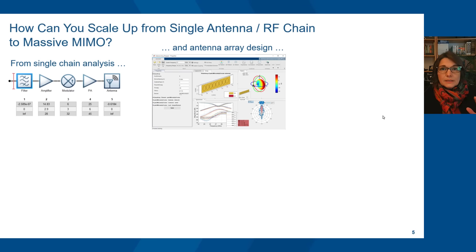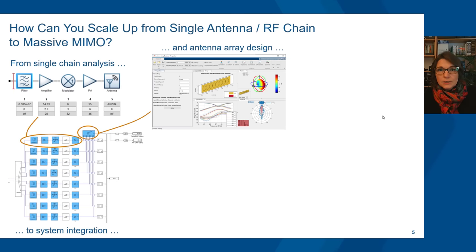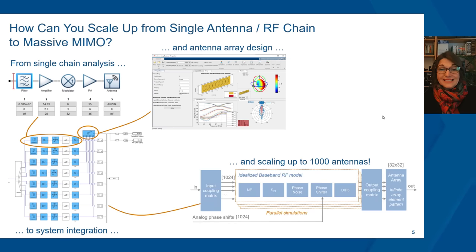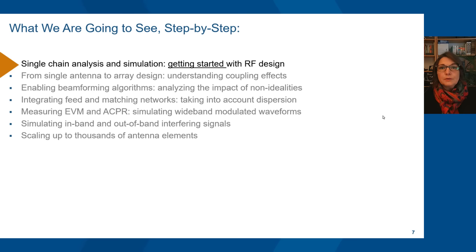We will start with the design of a single chain as our baseline, then design the array, then integrate them together into a larger system with eight antennas and eight chains, and from there scale up to 1024 antennas. We will see step by step the entire process, increasing progressively the complexity of our model, and we will use models throughout our entire design cycle.